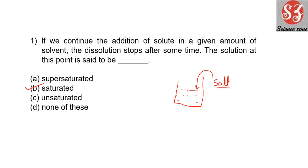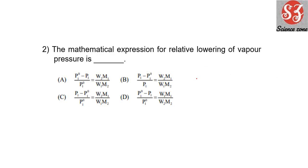Next: 'The mathematical expression for relative lowering of vapor pressure is...' We have been solving this in the previous two videos, so we know the answer is option A, where: (vapor pressure of pure solvent minus vapor pressure of solution) divided by vapor pressure of pure solvent equals W2 × M1 divided by W1 × M2.